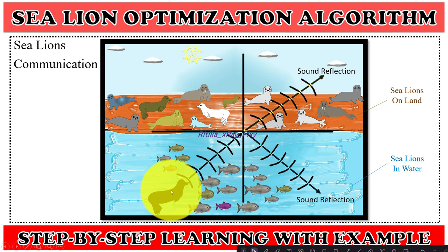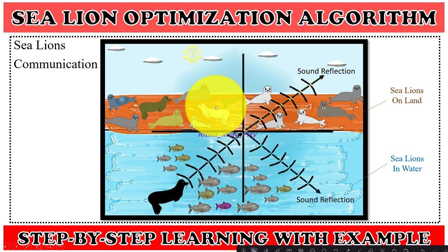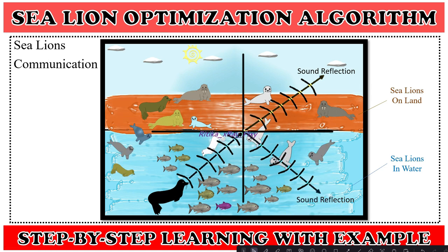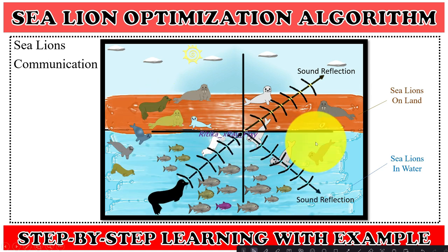You can see a sea lion calling other members to join both on land and in water. Other members then join and they hunt as a group. This group hunting behavior is simulated in the Sea Lion Optimization Algorithm to find the optimal solution.